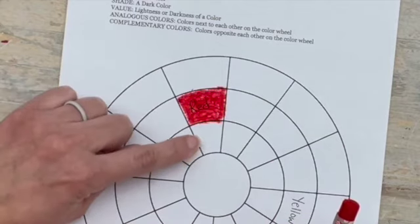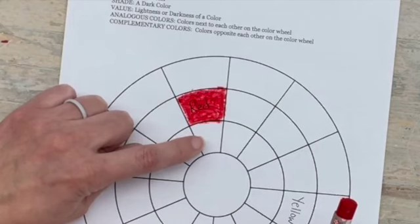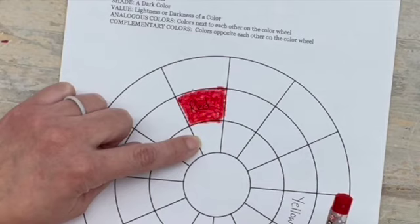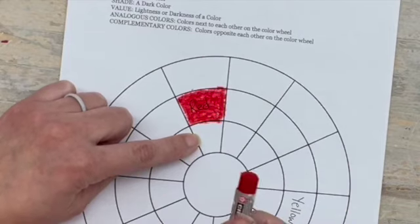Now as I said we want to make what's called a tint in the middle. That is a lighter version of your color. So in order to make a lighter version of red we are going to add white to that.